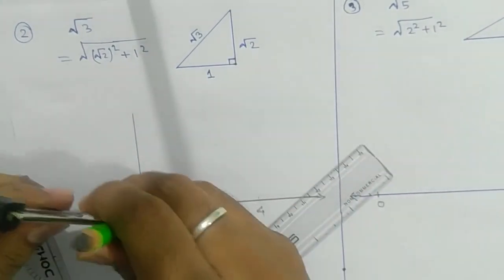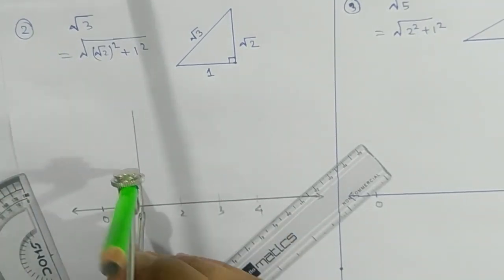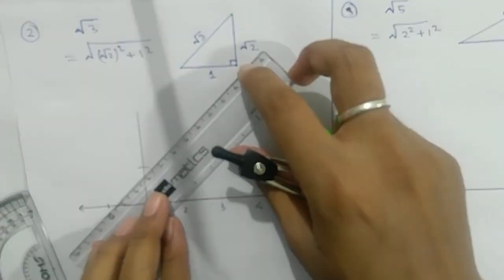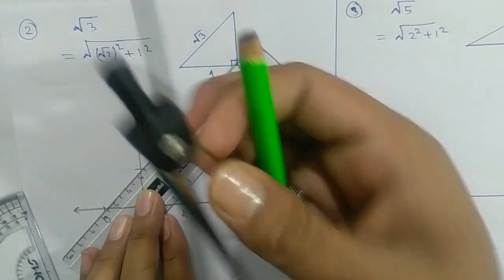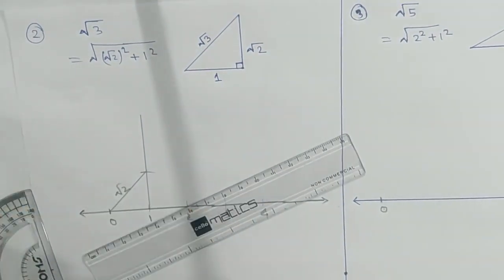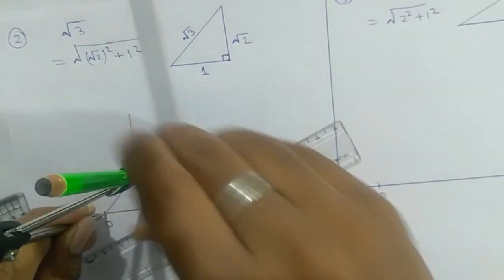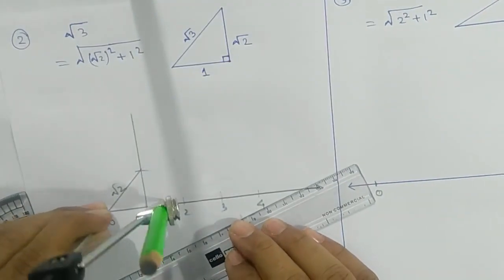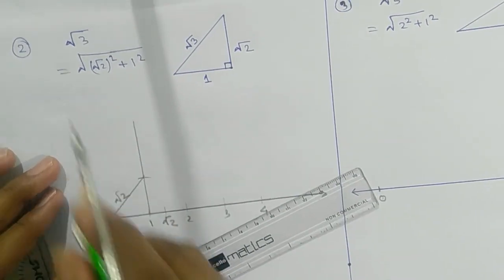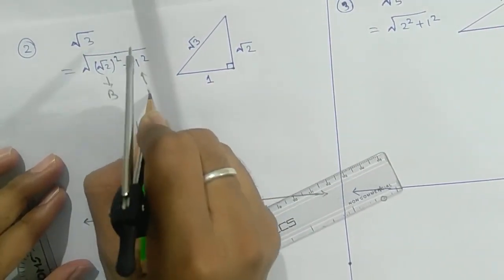Extend it, take the length of one unit, and mark it on the perpendicular here. Join this — that diagonal will be your root 2. Take the length of root 2 and draw an arc on the number line. This arc gives you root 2. Now, your base is root 2 and your perpendicular will be 1 unit.